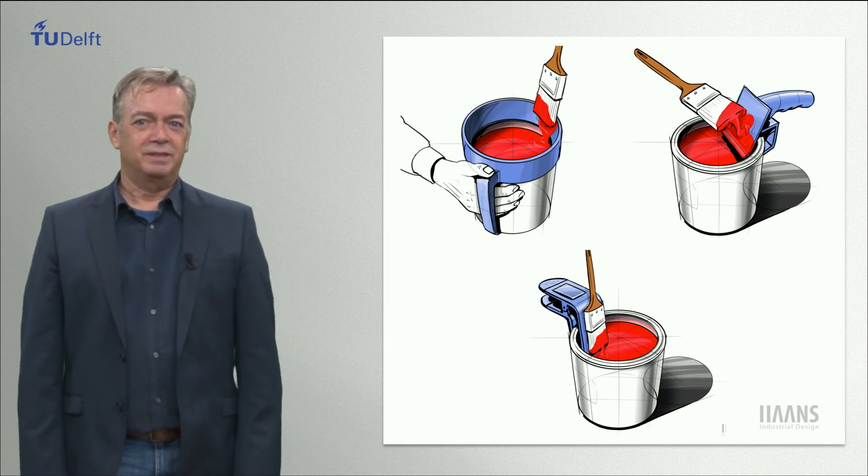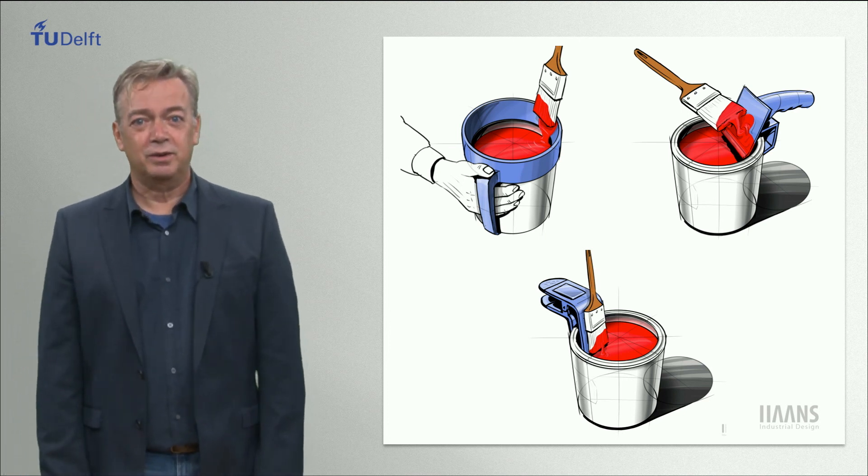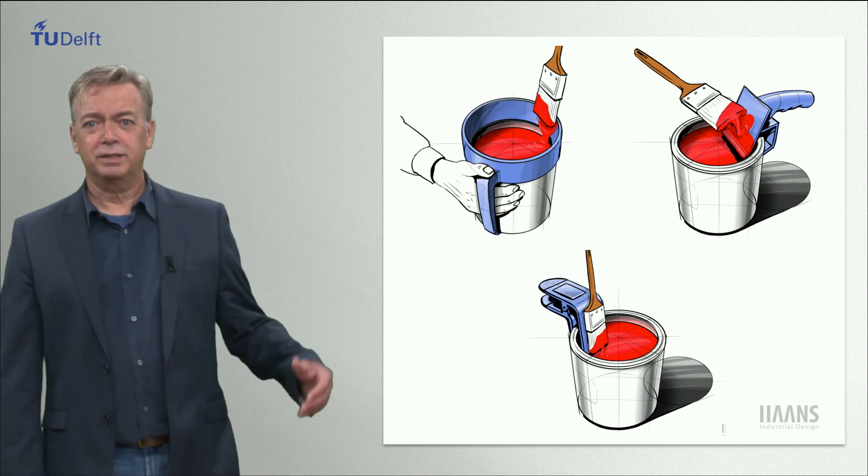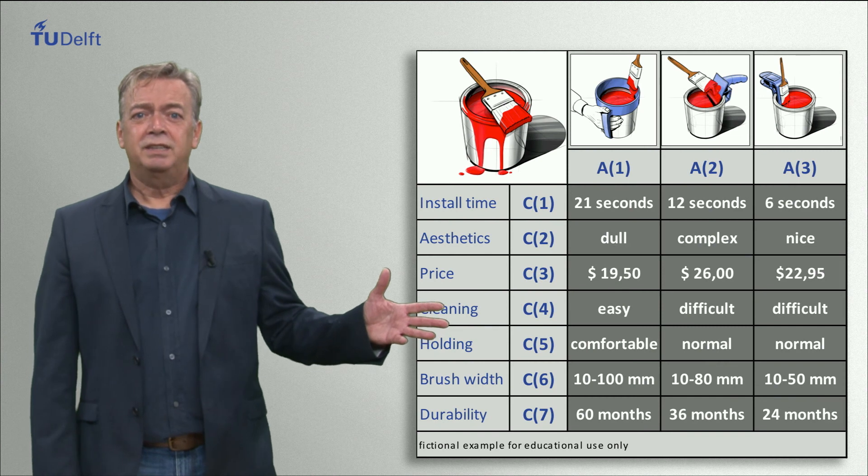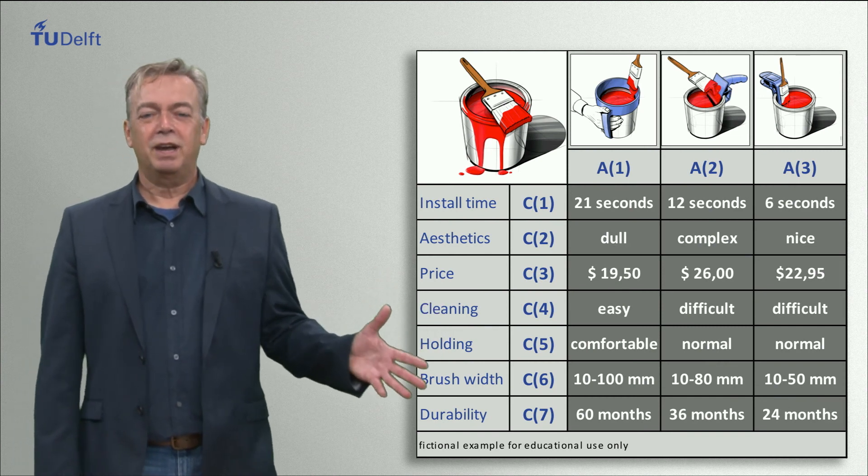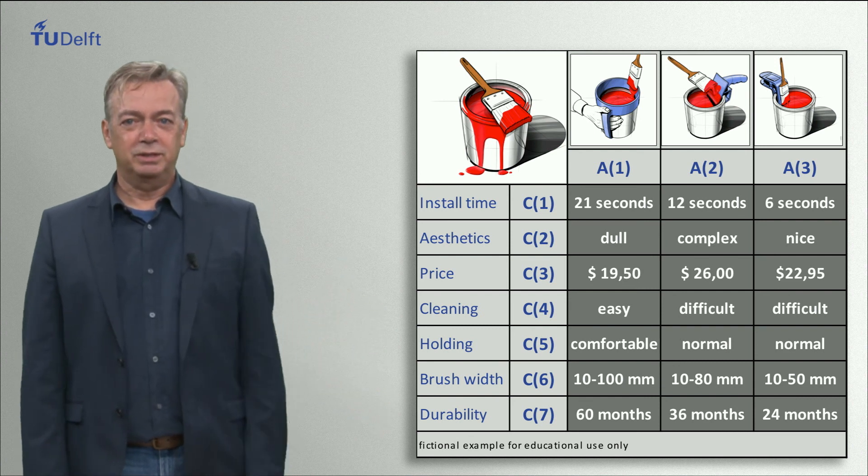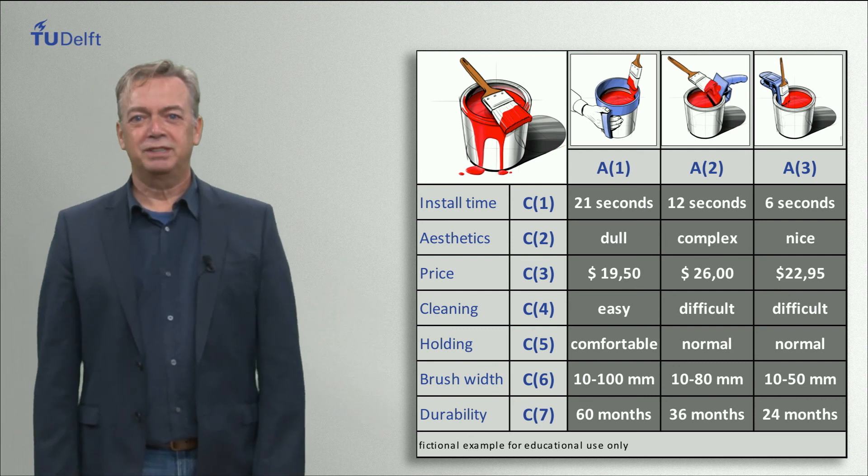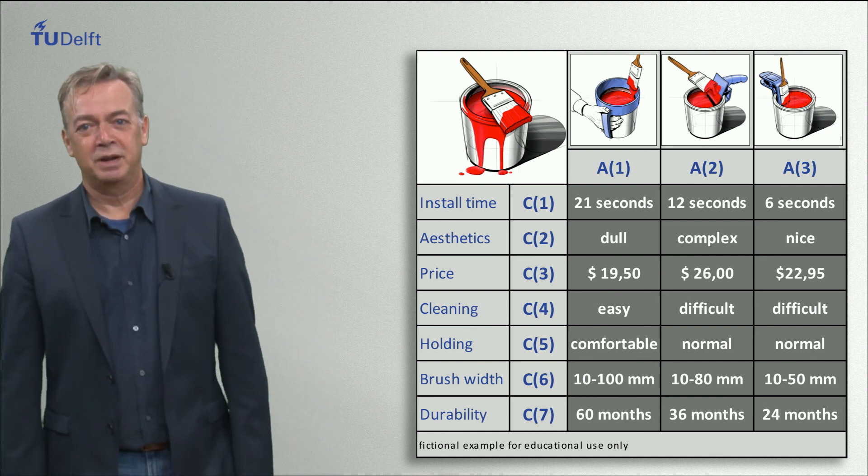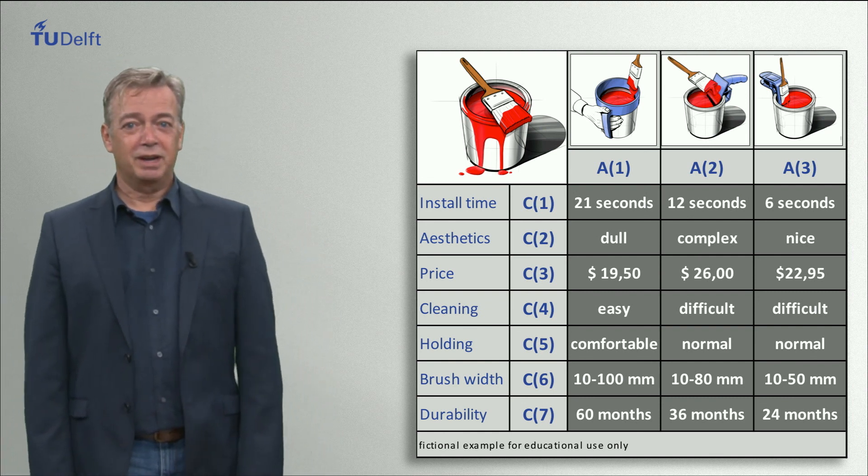Of course there is a set of criteria captured in a list of requirements, so let's put them in a table together with the three alternatives. It is easy to imagine that this representation will not help us to get a quick answer on what is the best solution. You would have to be able to process seven criteria for three alternatives equals 21 combinations. But this is not the only complication.